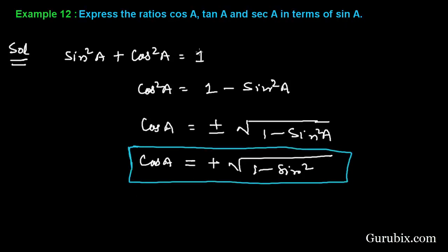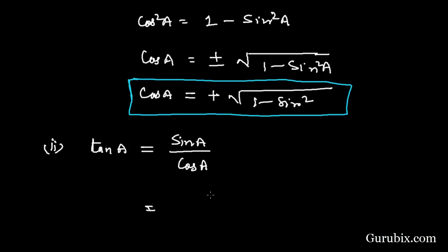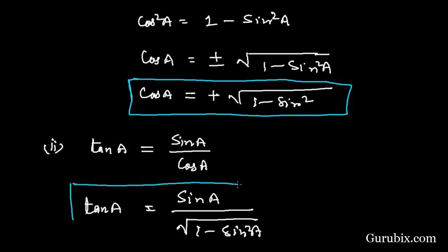Now we shall find tan A in terms of sin A. We know that tan A = sin A / cos A, and we have just calculated the value of cos A, which is √(1 - sin²A). So tan A = sin A / √(1 - sin²A).